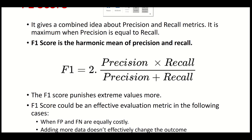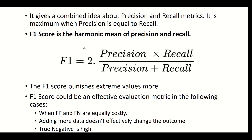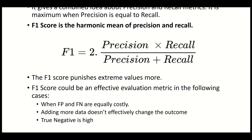There is also the F1 score, which is the harmonic mean of precision and recall. F1 = 2 × (precision × recall) / (precision + recall). F1 score is effective when false positives and false negatives are equally costly, when adding more data does not effectively change the outcome, or when true negatives are high.